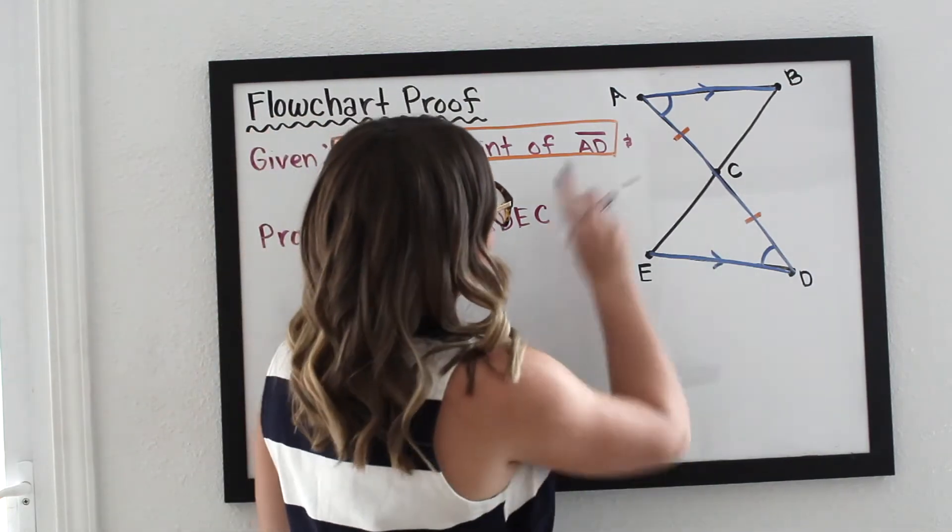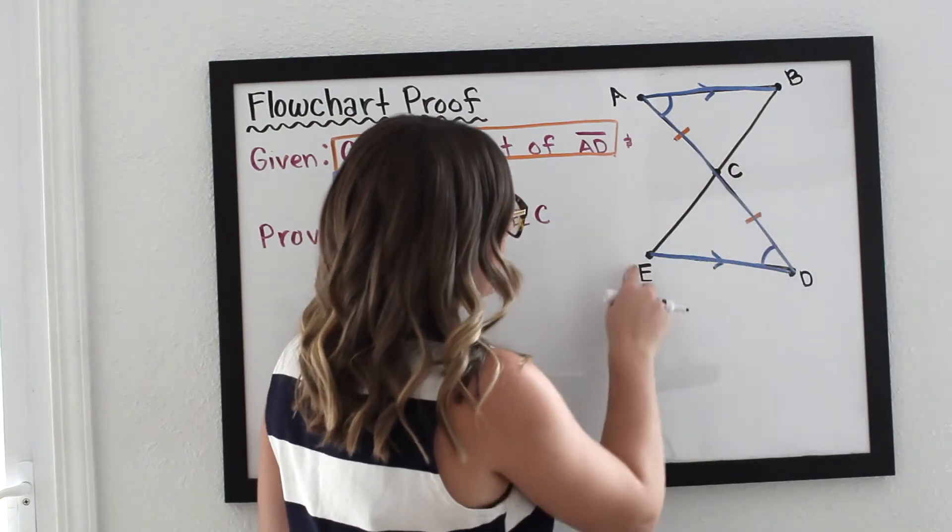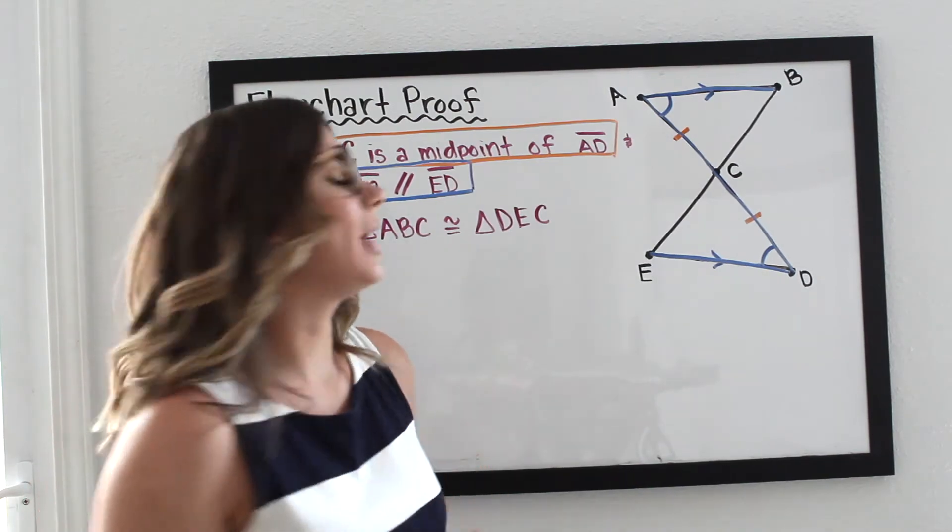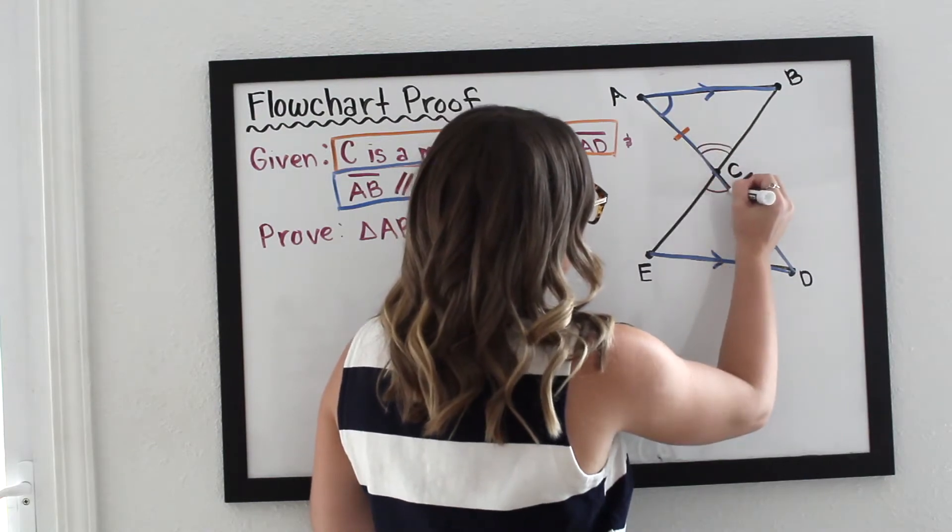So what I'm noticing here is angle ACB is congruent to angle DCE because vertical angles are always congruent. That's another angle relationship. So I'm going to mark that here and here.